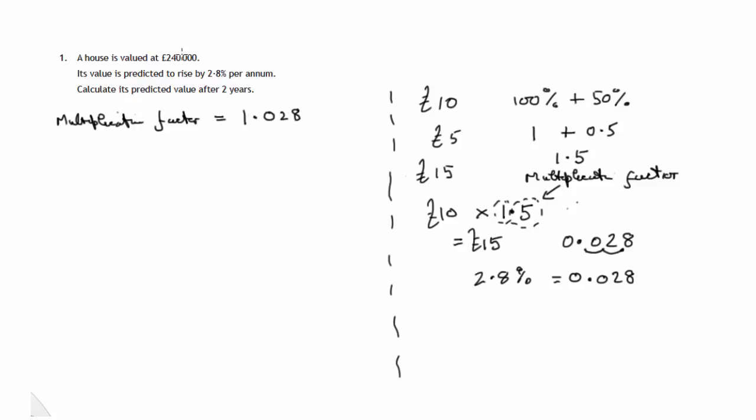Now if we take £240,000, multiply it by that, we'll get the result of increasing £240,000 by 2.8% once. That's for the first year. If we then proceed to multiply again by this factor, we'll have the value after two years.